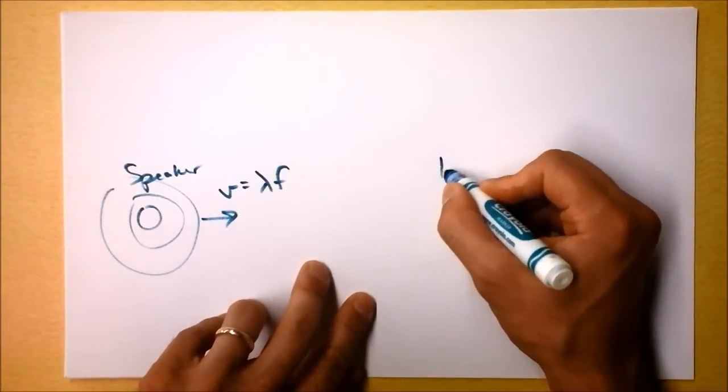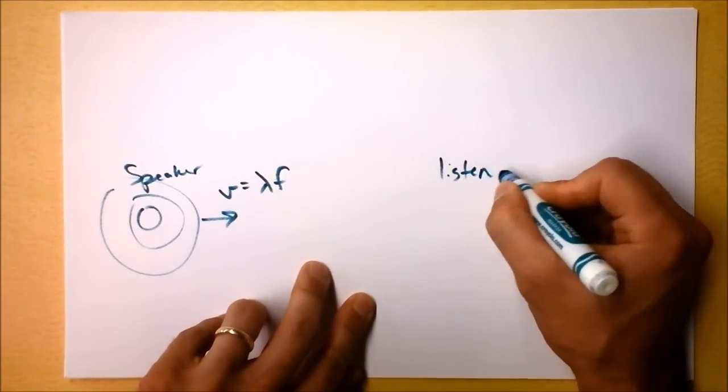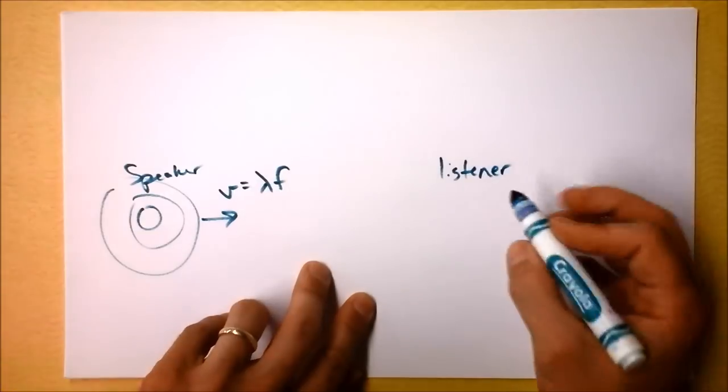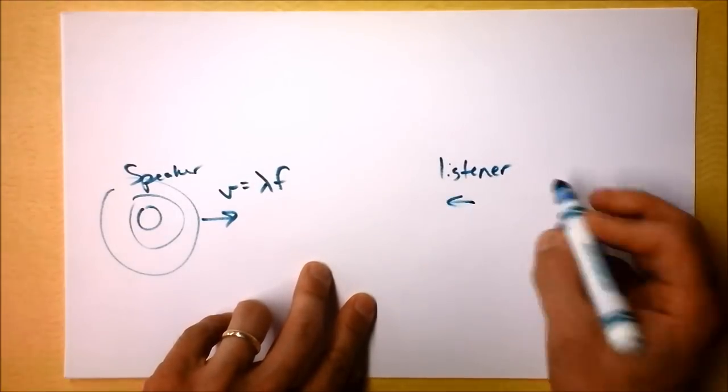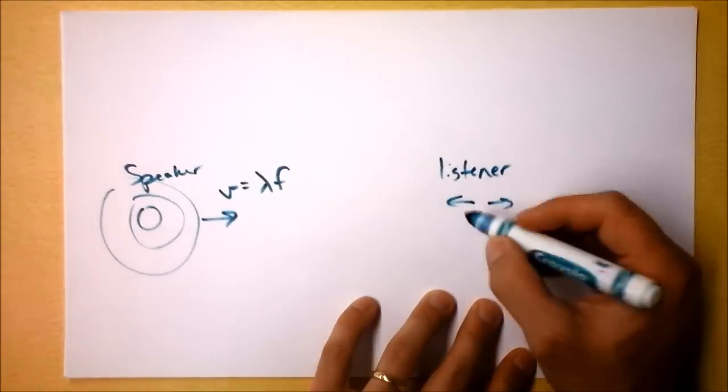So we'll say that that's the case and that's how fast the wave is actually moving through the air. And then we'll say that this is our listener, and it could be a microphone.